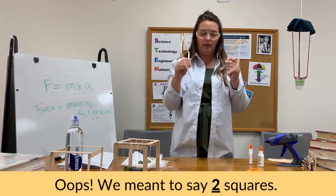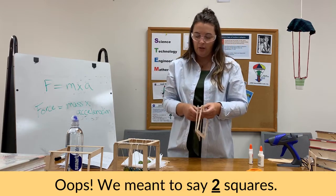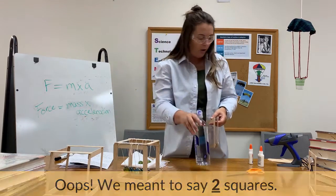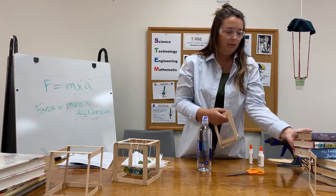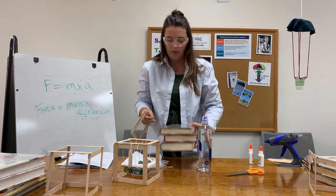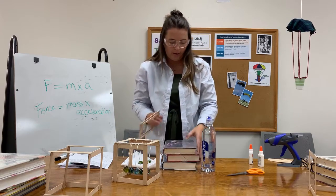So now we have our four squares. The next thing you're going to do is you're going to want to get some water bottles or some big books, because we have to start making our squares go upright.